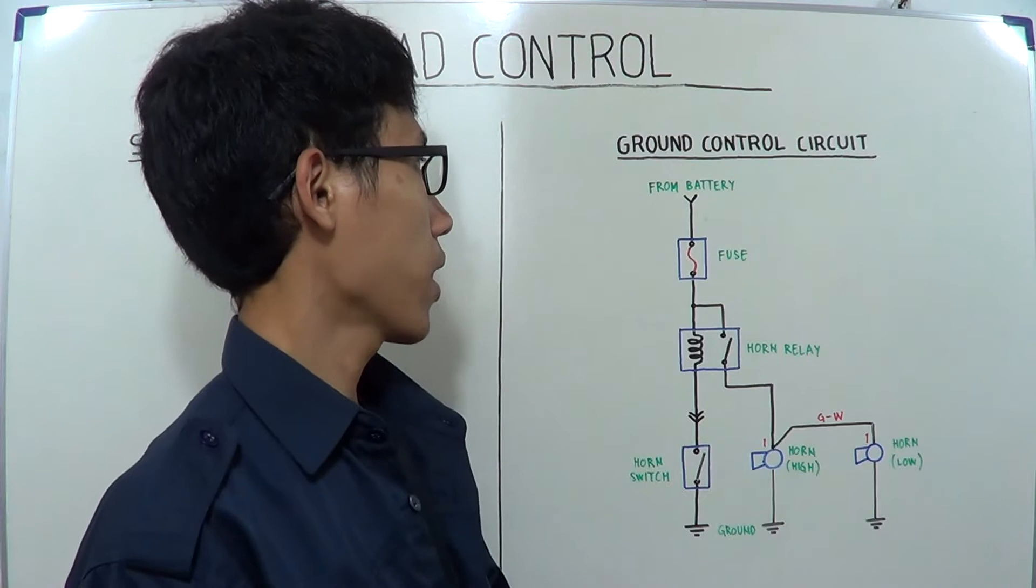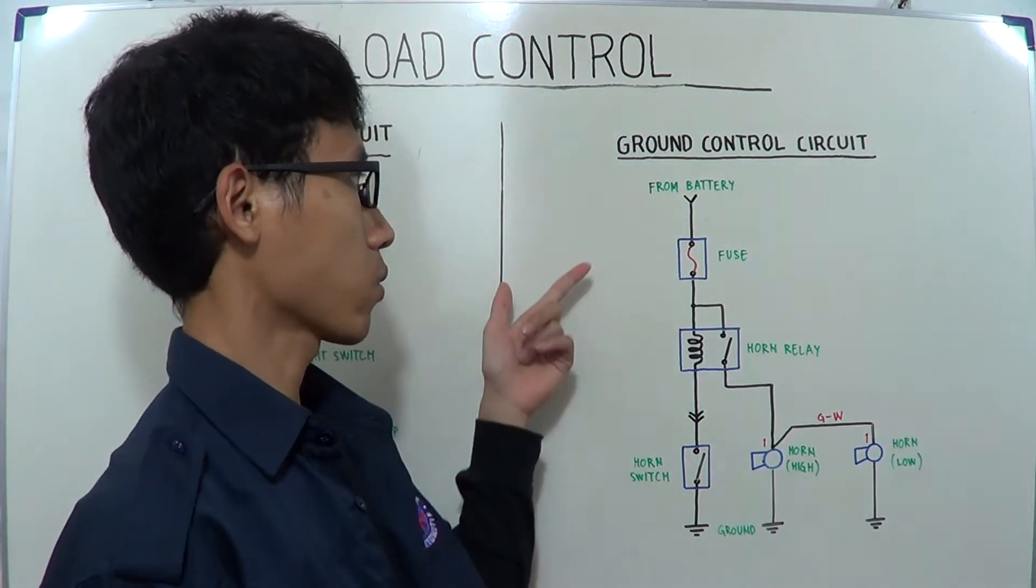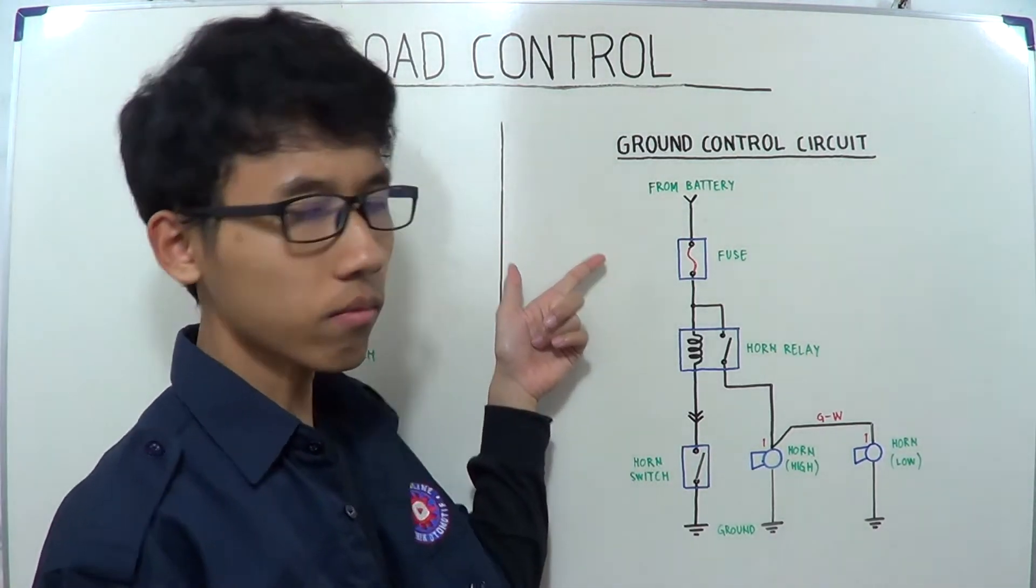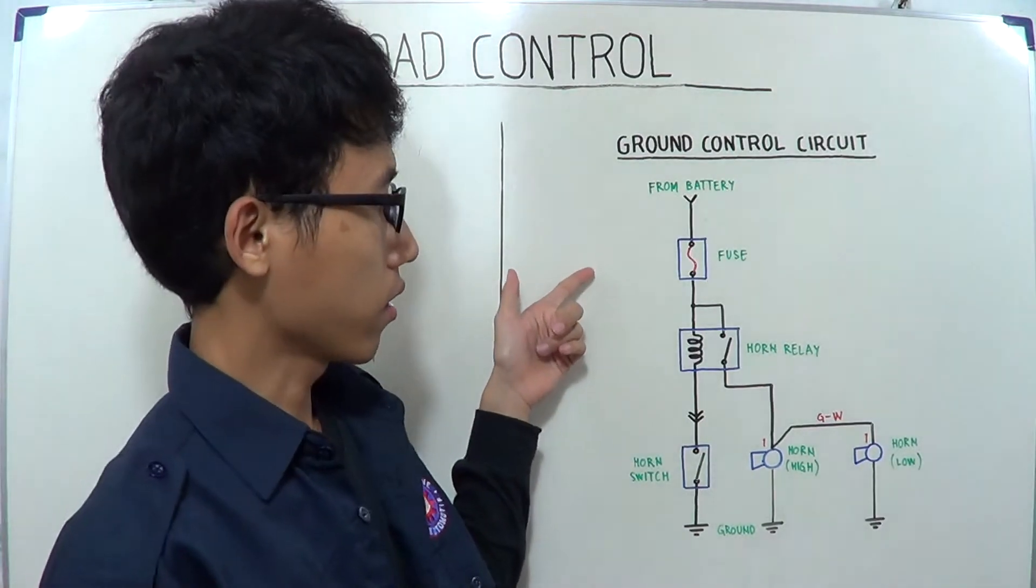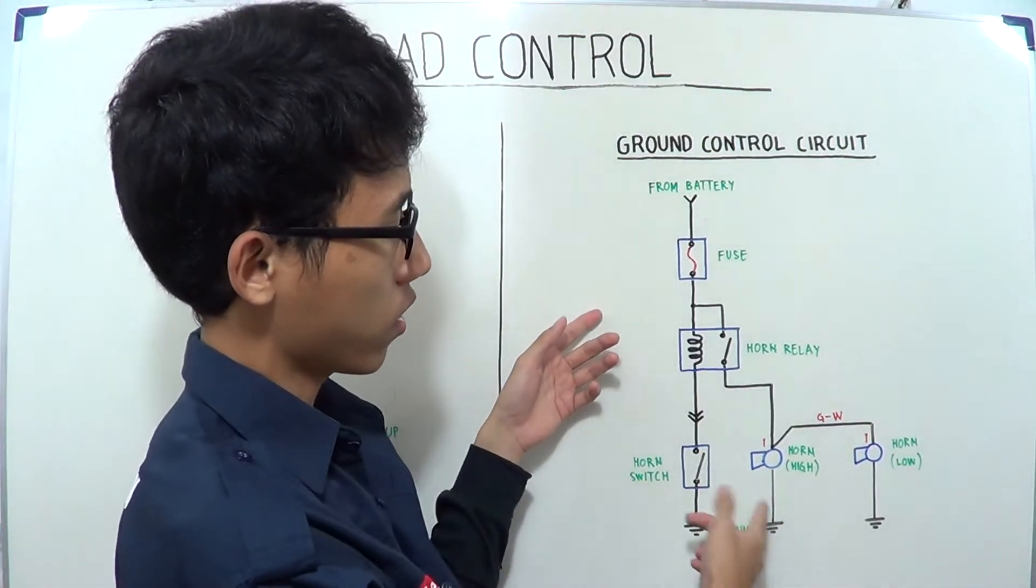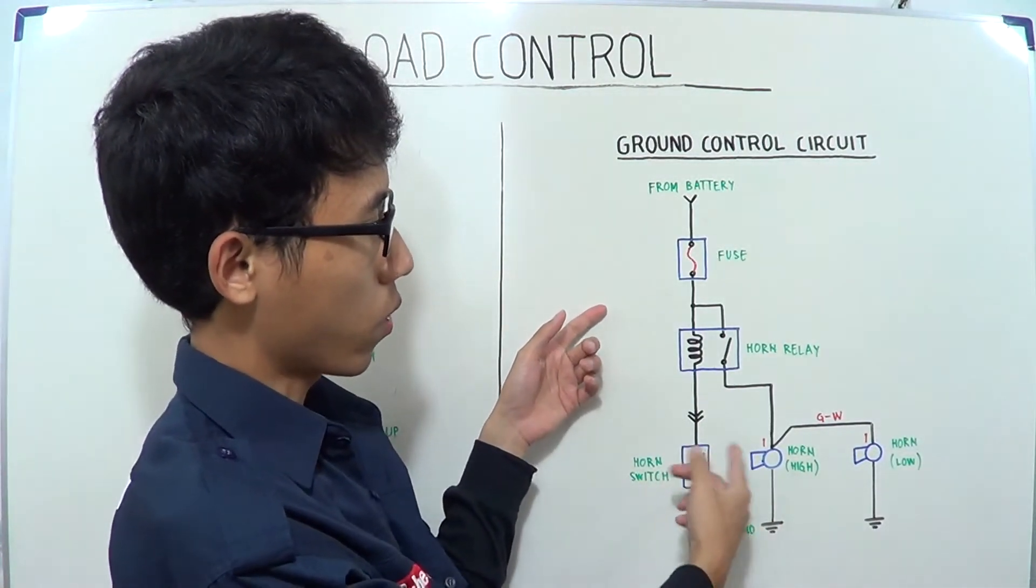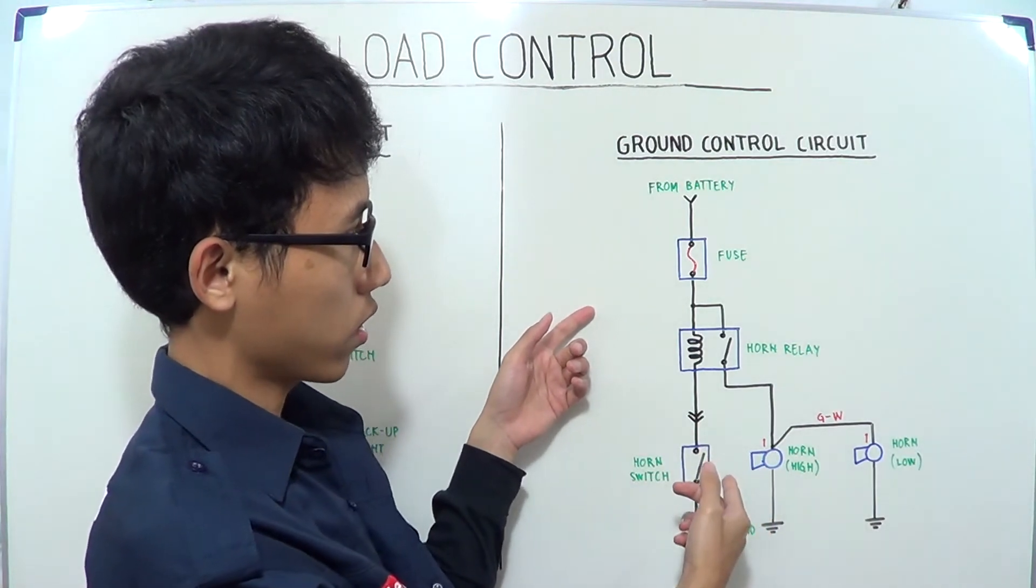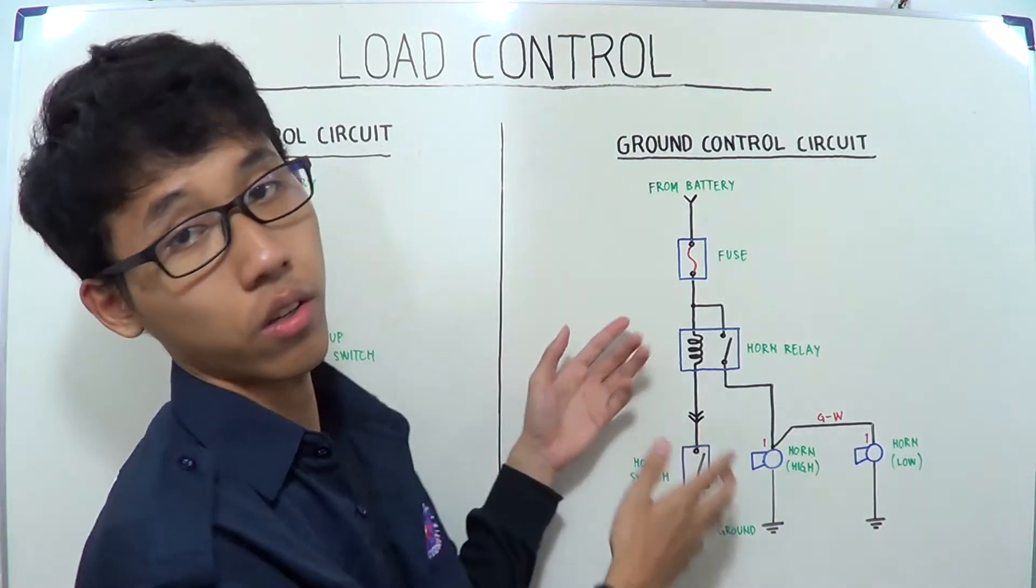Now the second type of control circuit is ground control circuit. The electric current, in this example, it's a horn electric circuit on car.